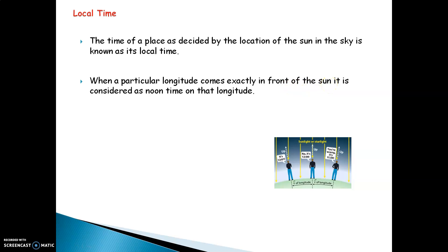When the longitude comes exactly in front of the sun, that particular area on the earth will experience local time. In this image you can see the earth rotating on its longitude with sun rays. One man is standing on a longitude which has passed the sun directly — for him it is one past twelve. Another man is standing just below the sun, so it is 12 in the afternoon. A third person's longitude has yet to come below the sun, so it is not yet 12 o'clock.